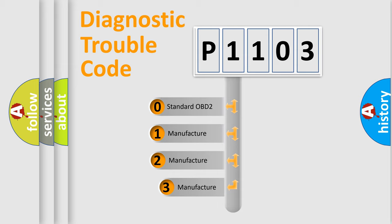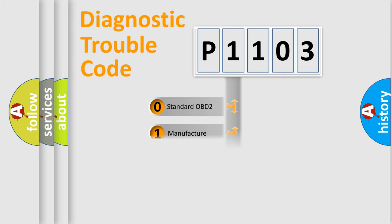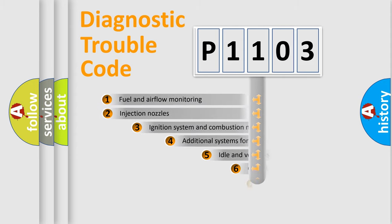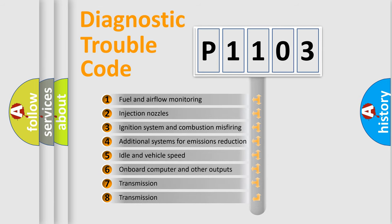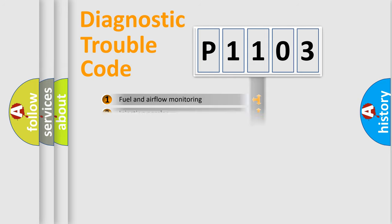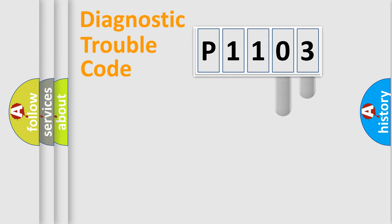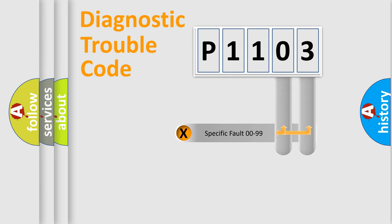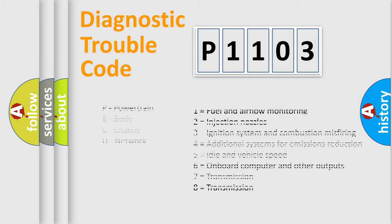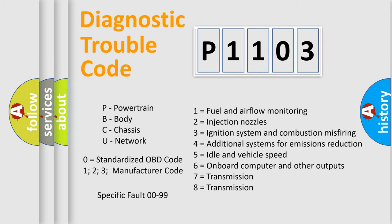If the second character is expressed as zero, it is a standardized error. In the case of numbers 1, 2, or 3, it is a manufacturer-specific expression of the car error. The third character specifies a subset of errors. This distribution is valid only for the standardized DTC code. Only the last two characters define the specific fault of the group, and this division is valid only if the second character code is expressed by the number zero.